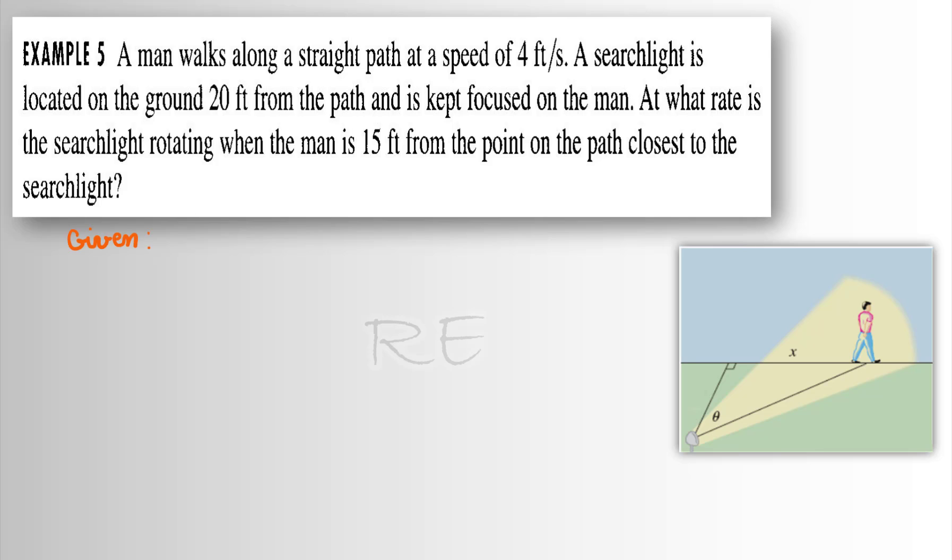In example 5, the speed of the man is given. dx/dt is equal to 4 feet per second. Now, if we call the searchlight L and the beginning of the path A, AL will be equal to 20 feet.